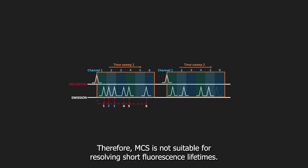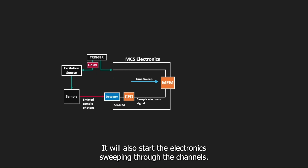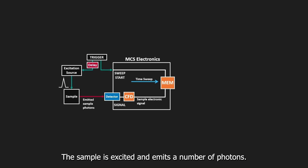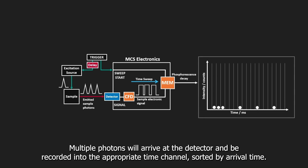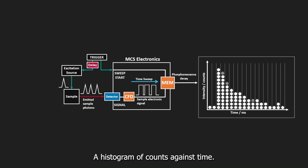All photons arriving within a channel will be grouped together. Therefore, MCS is not suitable for resolving short fluorescence lifetimes. The computer triggers the excitation source — a pulsed laser or flash lamp — and will also start the electronics sweeping through the channels. The sample is excited and emits a number of photons. Multiple photons will arrive at the detector and be recorded into the appropriate time channel, sorted by arrival time. These counts are built up into the phosphorescence decay curve, a histogram of counts against time.